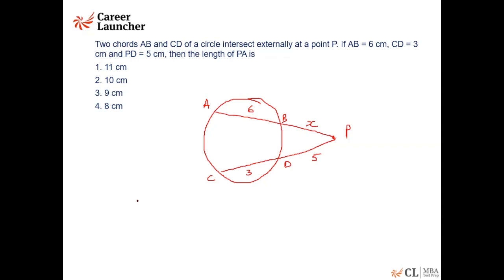So we know that if P is a point and these two are the secants PA and PC are the secants, then PB into PA must be equal to PD into PC. So this is X into X plus 6 must be equal to 5 into 8, which is equal to 40.